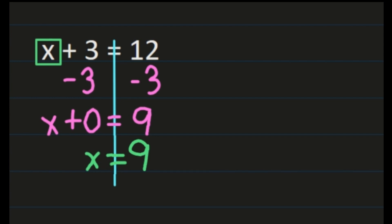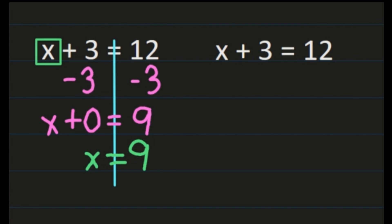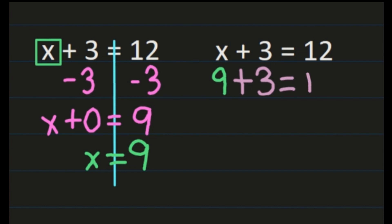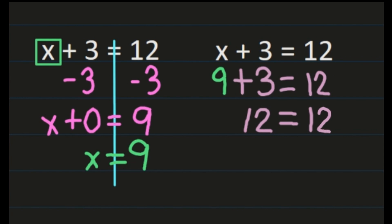One nice thing about equations is you can go back and check your work. We're going to go back to that original problem: x plus 3 equals 12. We said x equals 9, so in place of x we're going to put the 9, and then we still have plus 3 equals 12. So on our left, 9 plus 3 is 12 — so 12 equals 12, which means that our solution of x equals 9 is correct. If we don't get 12 equals 12, it means you made a mistake and you need to work your equation again.